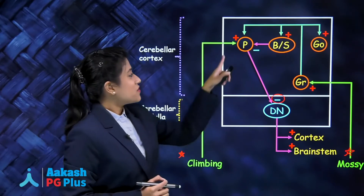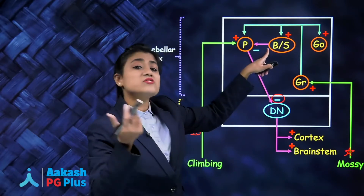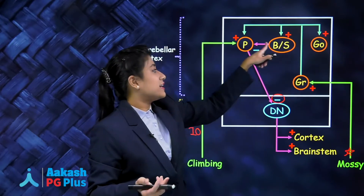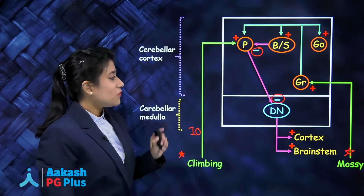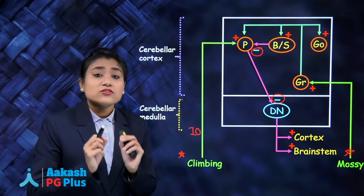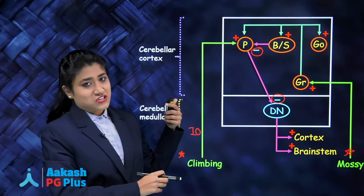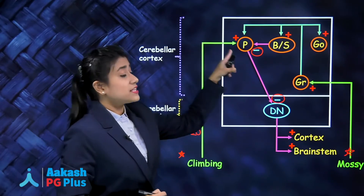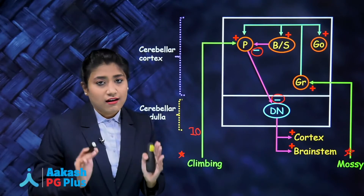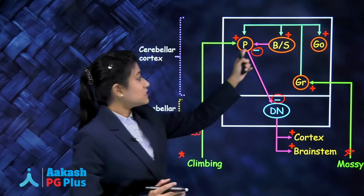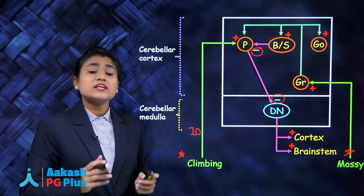At the same time that Purkinje cells are inhibiting deep nuclei, the basket cells and stellate cells — which were excited by granule cells — in turn inhibit the Purkinje cells. So granule cells are the only excitatory cells in the cerebellar cortex, while Purkinje cells, basket cells, stellate cells, and Golgi cells are all inhibitory in nature.